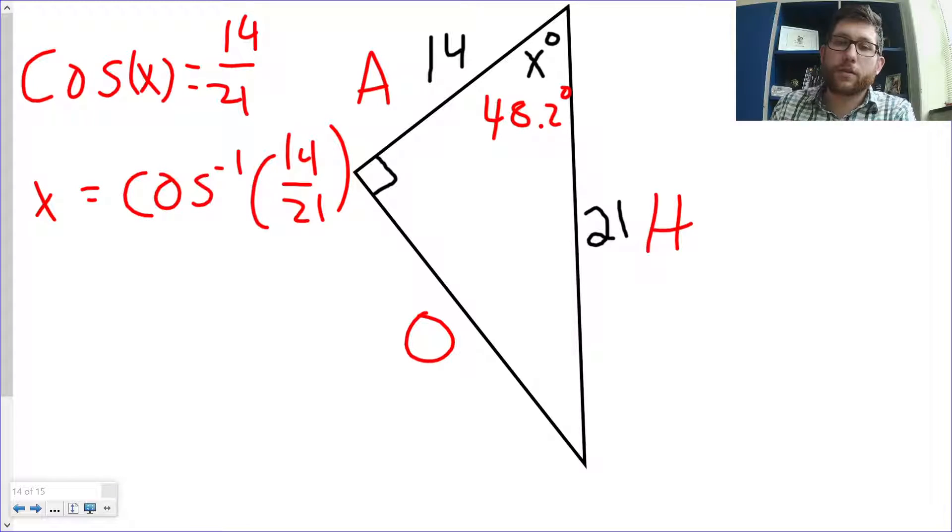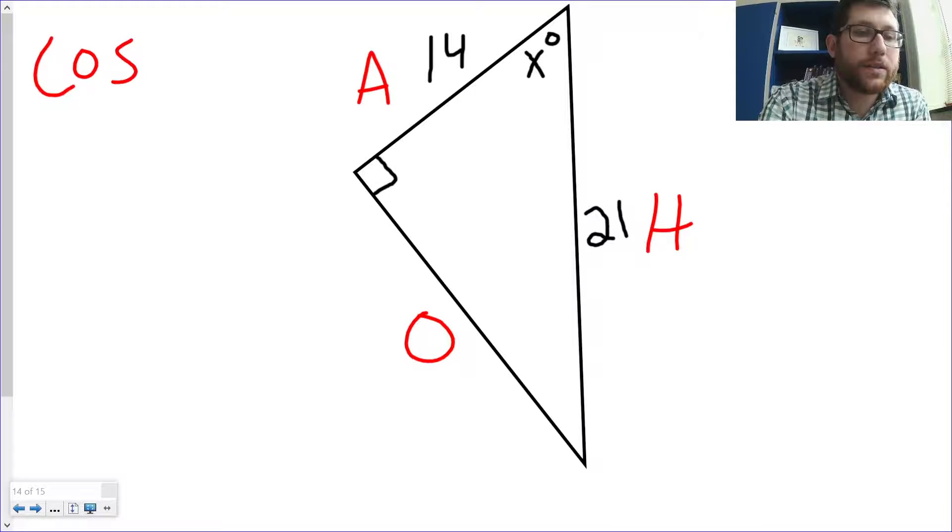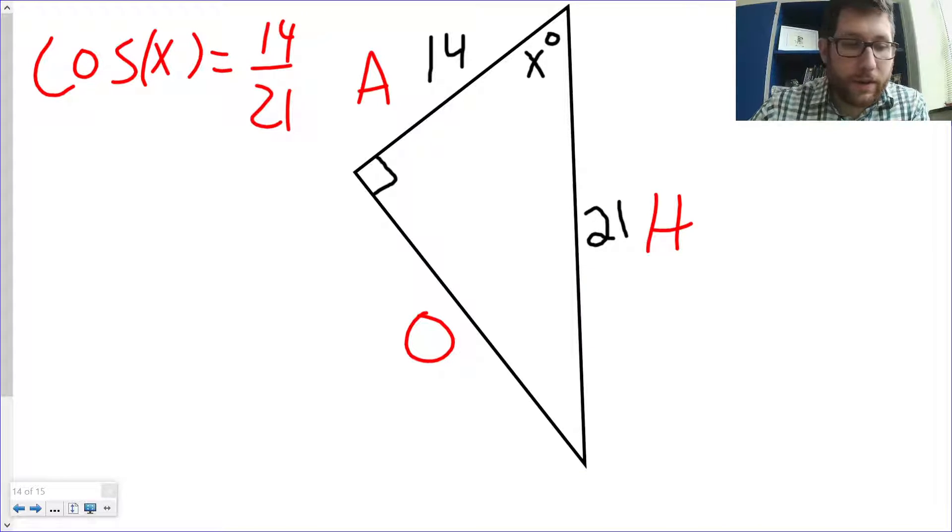All right. So, that's sine and cosine. There's one last thing I do want to talk about here. Let's back this up here. We've got O, H, and A, right? And if we were talking about cosine of X, we know that's equal to the O side, or the A side, 14 over 21. But I want to show you something else here.